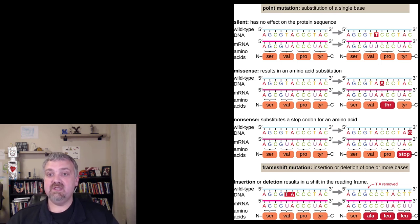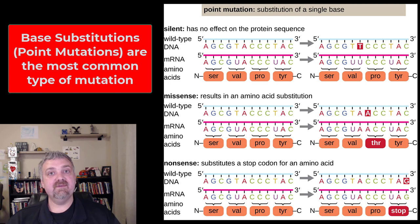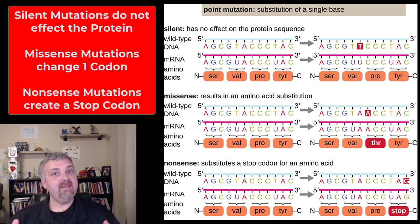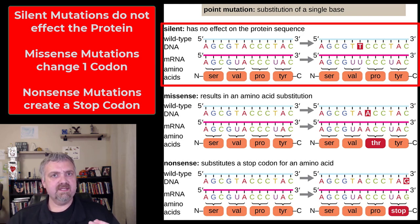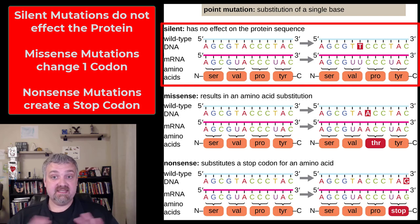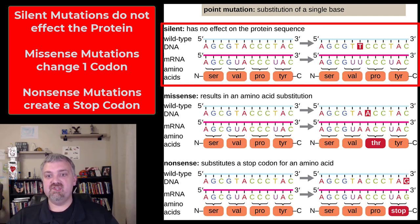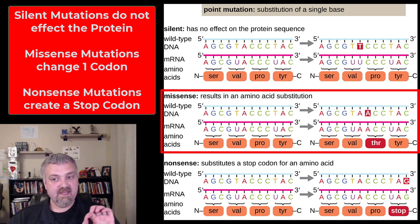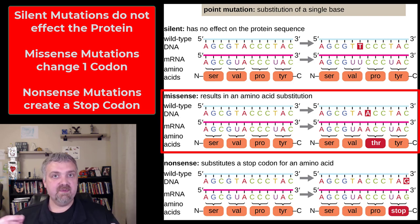Let's look at the different types of mutation. First we have point mutations, also called base substitutions. The key thing to remember is that one base is replaced with another — that's why it's called a base substitution, and it's by far the most common type of mutation. There are different subtypes: silent mutations, where the base substitution doesn't impact which amino acid is laid down; and missense mutations, where one base substitution changes one codon and thus one amino acid. Missense is the most commonly discussed type of point mutation.